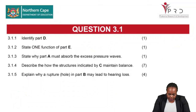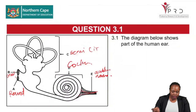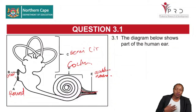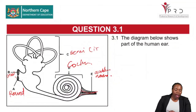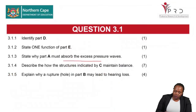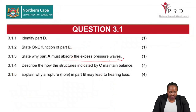Question 3.1.3 asks why Part A absorbs excess pressure waves. In the inner ear, vibration of the tympanic membrane creates pressure waves. Any excess pressure waves are absorbed by the round window, which is Part A. The round window absorbs excess pressure waves in order to avoid echoes.